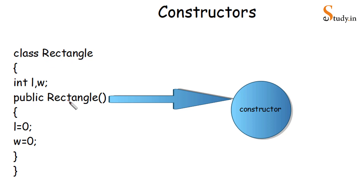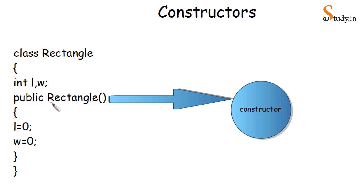So if you see here, we have a class called Rectangle. How do I know that this is a constructor and not an ordinary function? Because it has the same name as the class, followed by round parentheses — that means it is a constructor. Another thing is that a constructor does not have any return type — not even void. You will not write any return type for a constructor. Even if you do not write any statements within the constructor, that would still be okay.